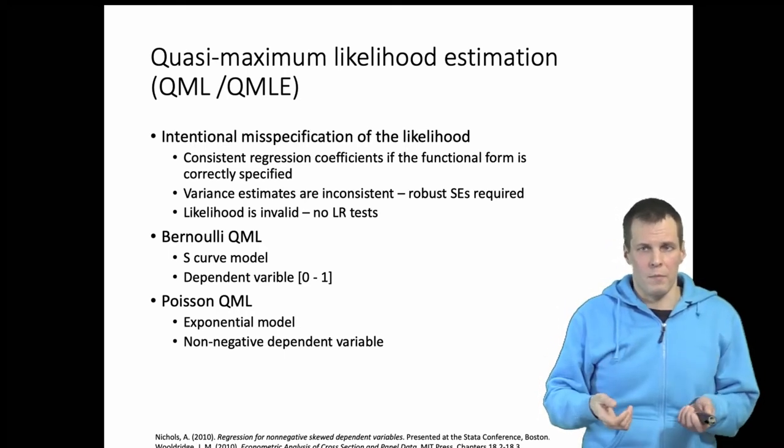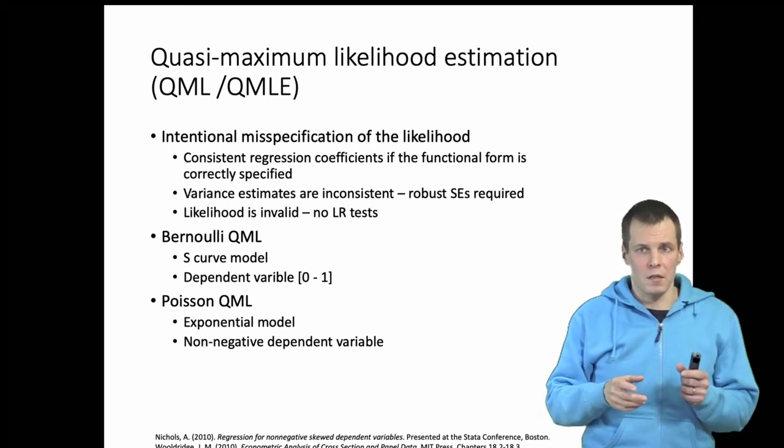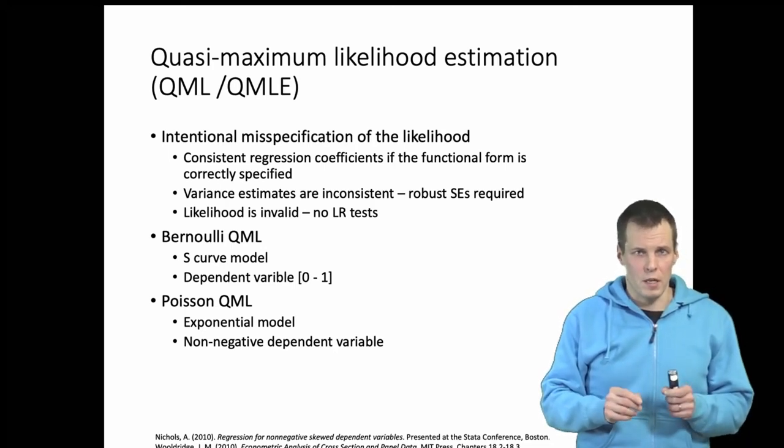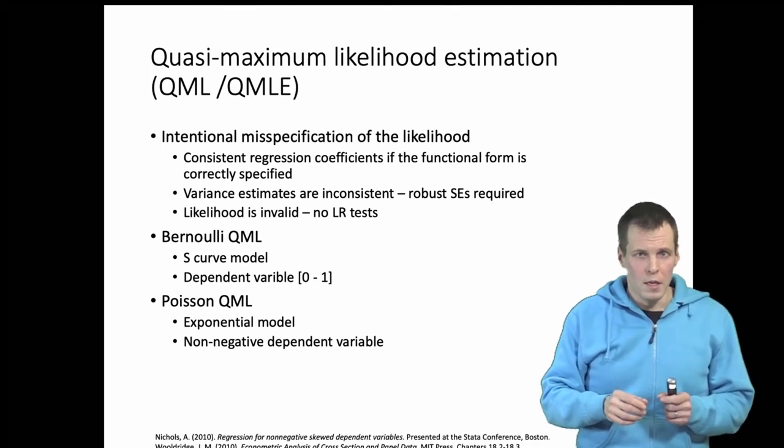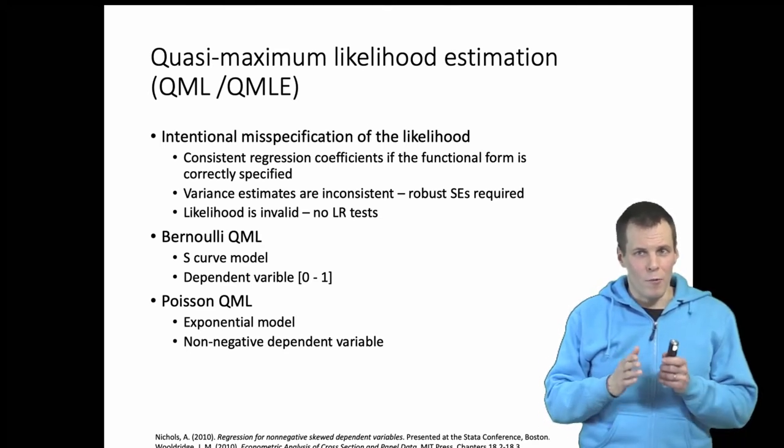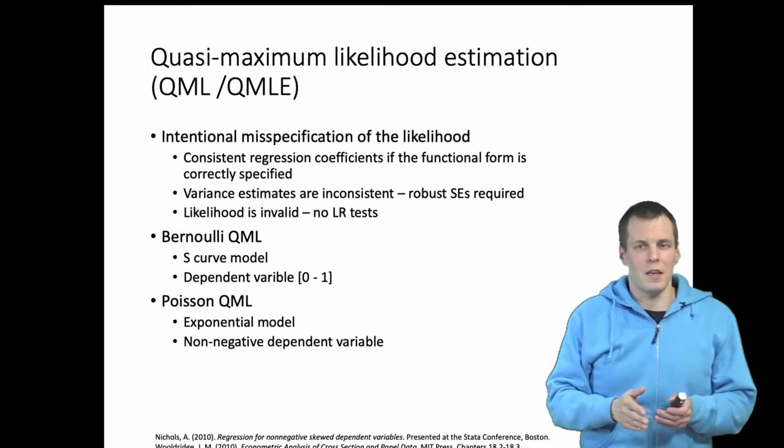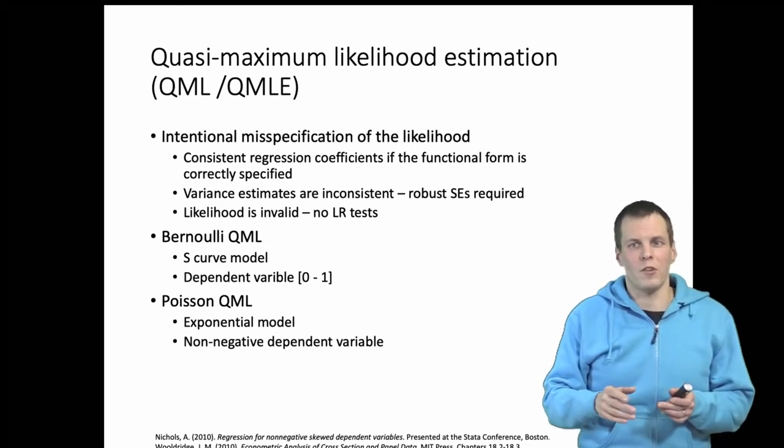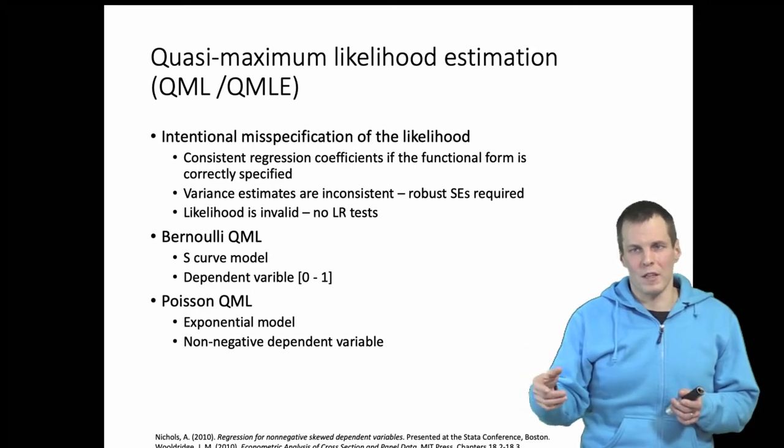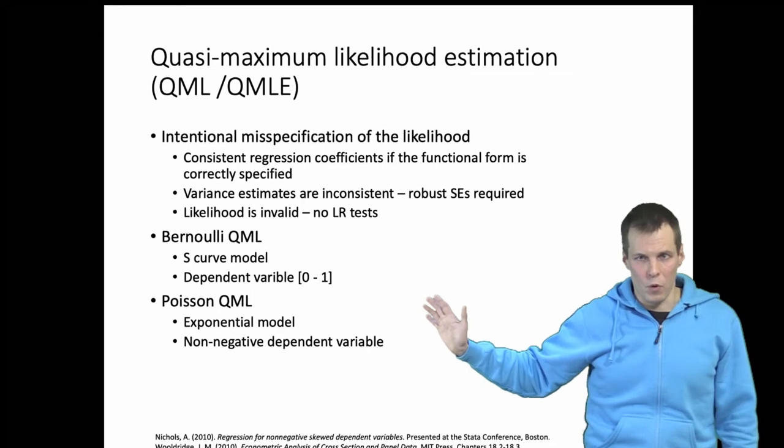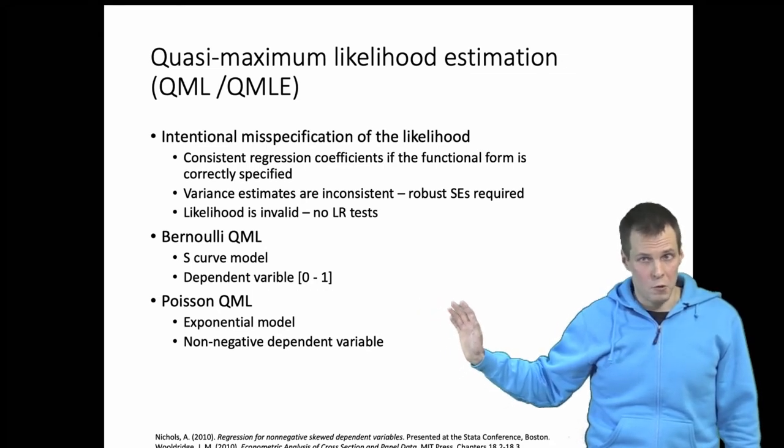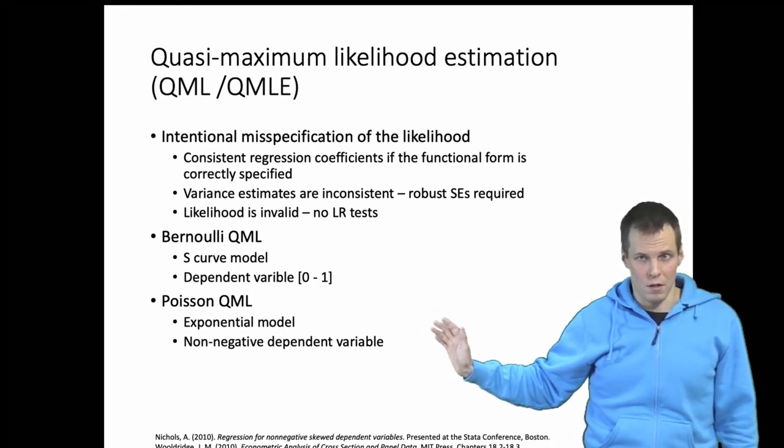If we have a large sample size then our estimates are going to be precise no matter what. So efficiency is not as important and if we want to have robust sets of estimates then instead of trying to figure out whether the dependent variable is negative binomial or Poisson or something else you can just apply Poisson regression analysis and trust that the results are actually consistent.